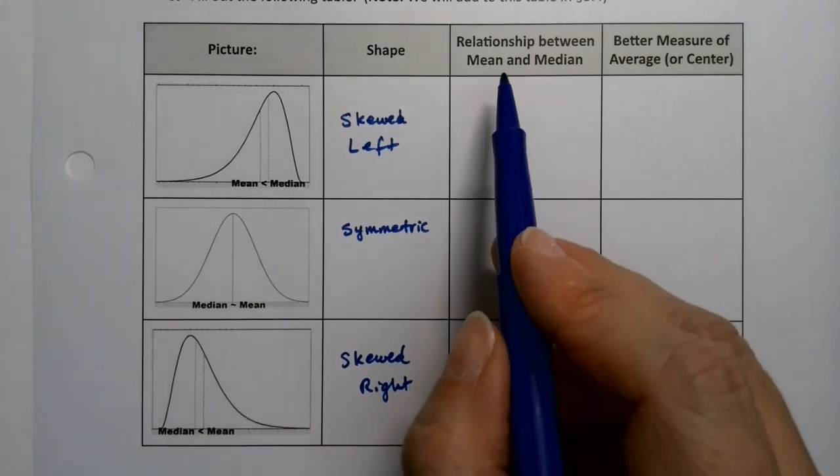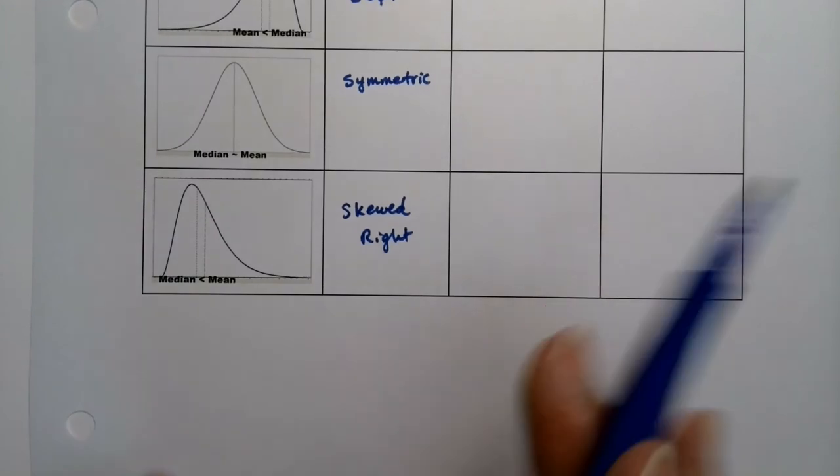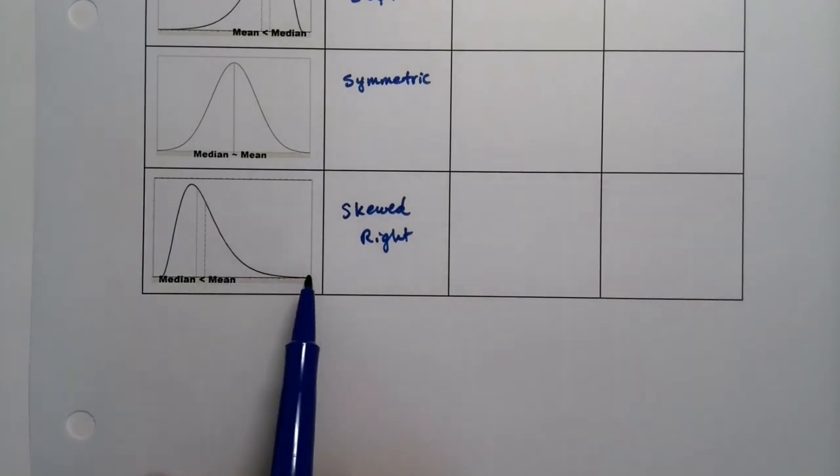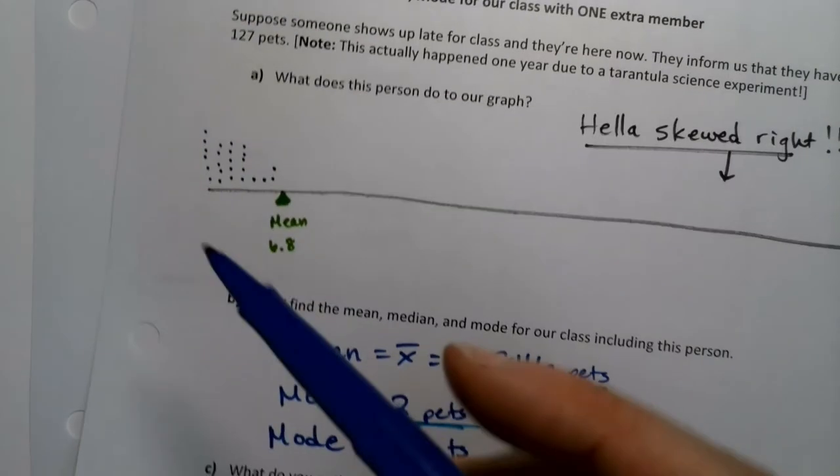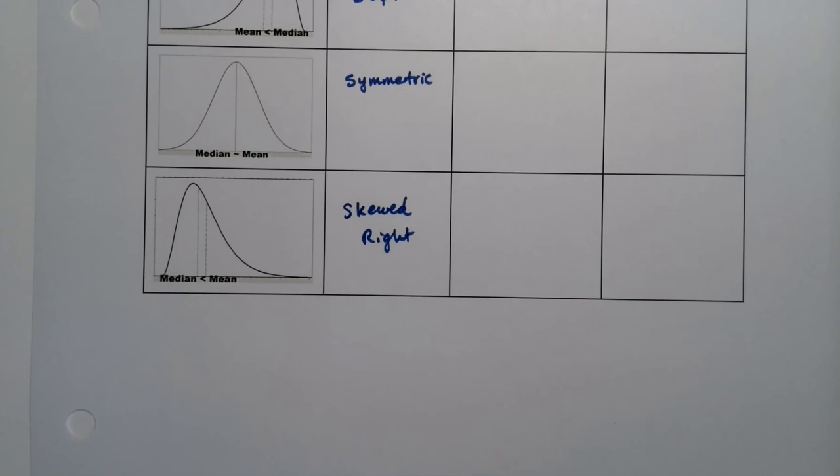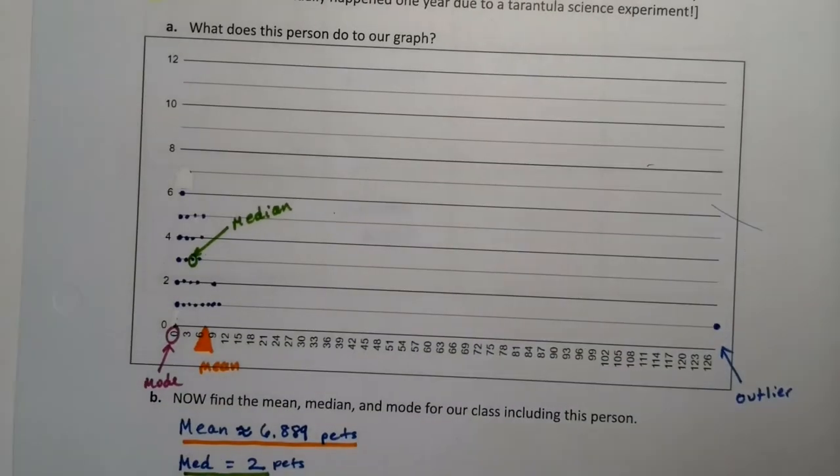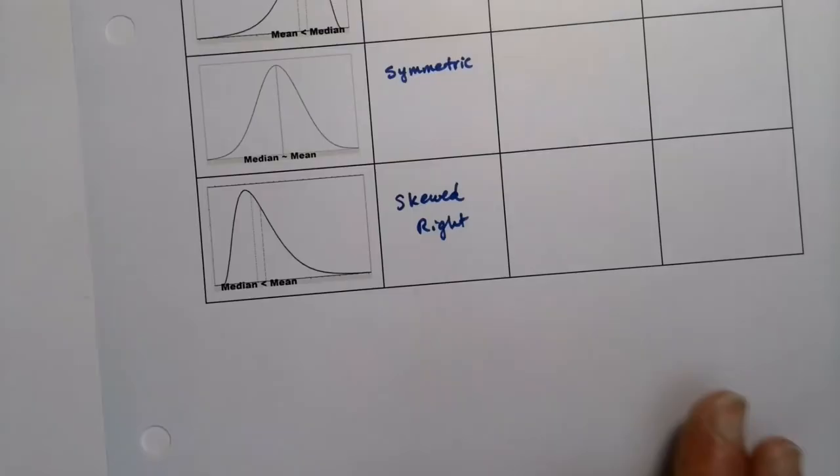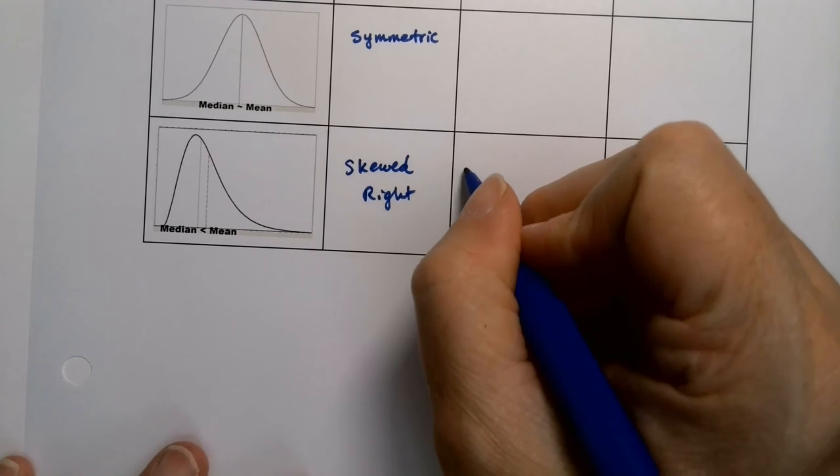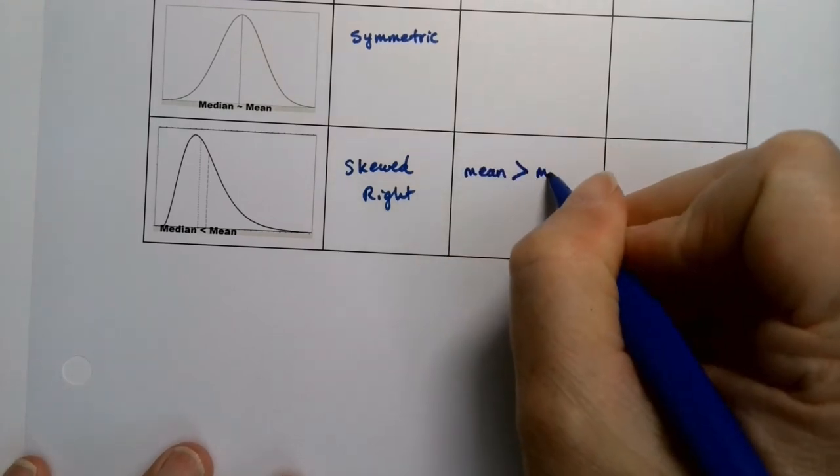So what's the relationship? Look at the bottom one because that's the easiest one for us to see. We had a big tail going to the right, we had a big outlier, and what happened was the mean was larger than the median. The mean got pulled towards that side, so the mean is bigger than the median.